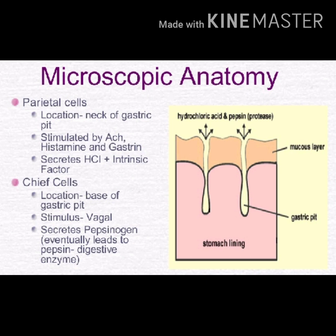Next is the microscopic anatomy of parietal cells and chief cells. Parietal cells are located in the neck of the gastric pits and are stimulated by acetylcholine, histamine, and gastrin; they secrete HCl and intrinsic factor. Chief cells are located at the base of the gastric pits and are stimulated by vagal signals; they secrete pepsinogen, which eventually leads to the digestive enzyme pepsin. In the diagram, the upper side shows parietal cells and the lower segment shows chief cells.